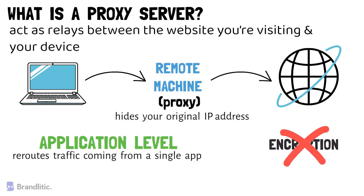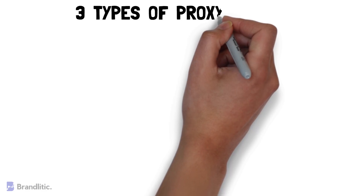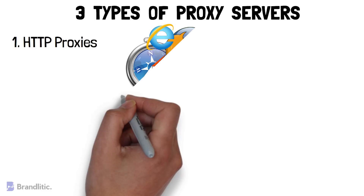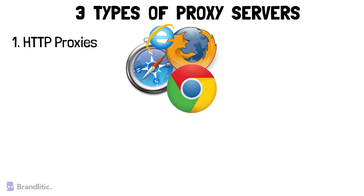Moreover, there are three main types of proxy. Number 1: HTTP proxies. These are the ones which only cater to web pages. That means if you set up a browser with an HTTP proxy, all your browser traffic will be rerouted through it. These are quite useful for web browsing and accessing geo-restricted websites.